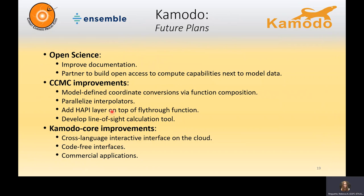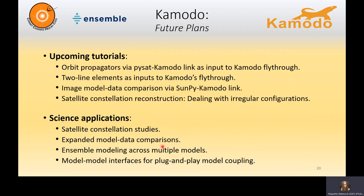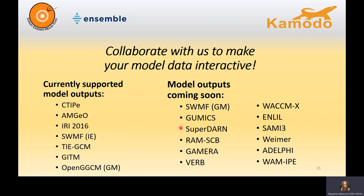Closing, our future plans for Komodo involve improving the documentation. There's a lot of behind-the-scenes work to speed up some interpolators, use function composition behind the scenes, and have a more plug-and-play structure for model-specific coordinate conversions. We're working towards adding a HAPI layer on top of the fly-through tool and eventually on top of the model readers. Ensemble is working on developing a cross-language interactive interface on the cloud as well as several code-free interfaces. There are a lot of tutorials coming up, including one about dealing with irregular satellite constellation configurations. The tools have a large variety of science applications including the constellation studies I mentioned. We invite the community to collaborate with us. This is the list of models we currently have and the list of models coming soon.